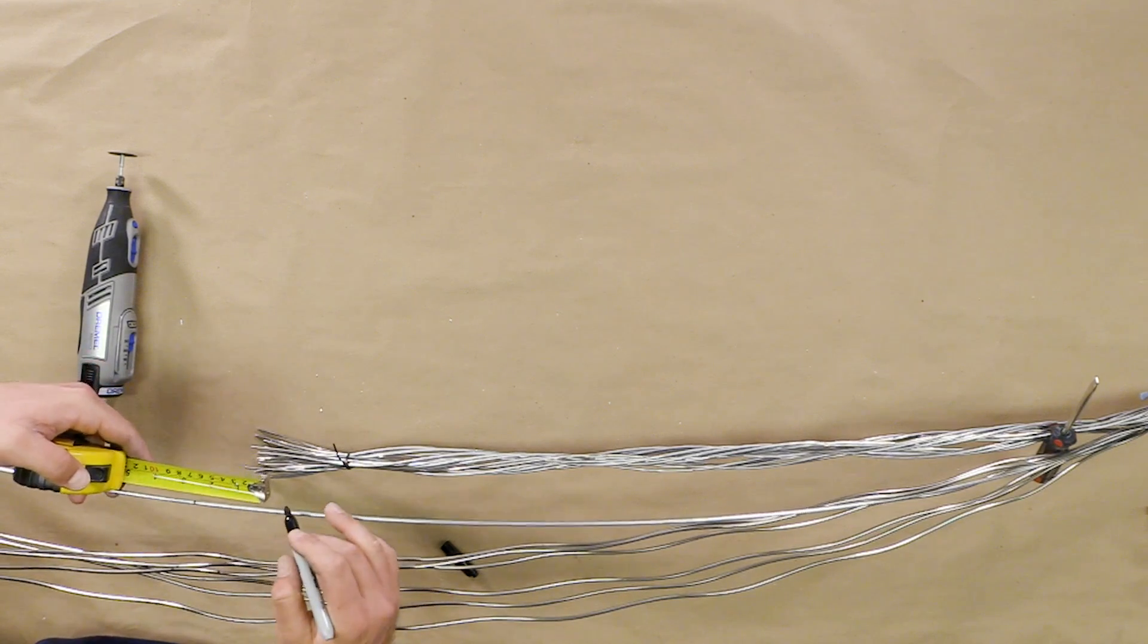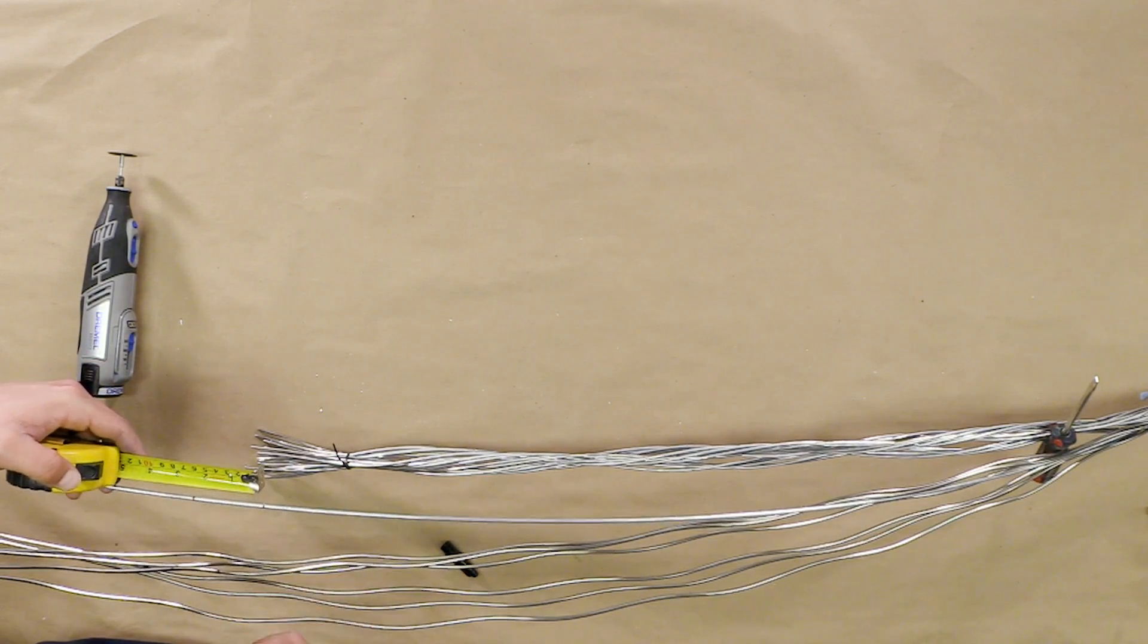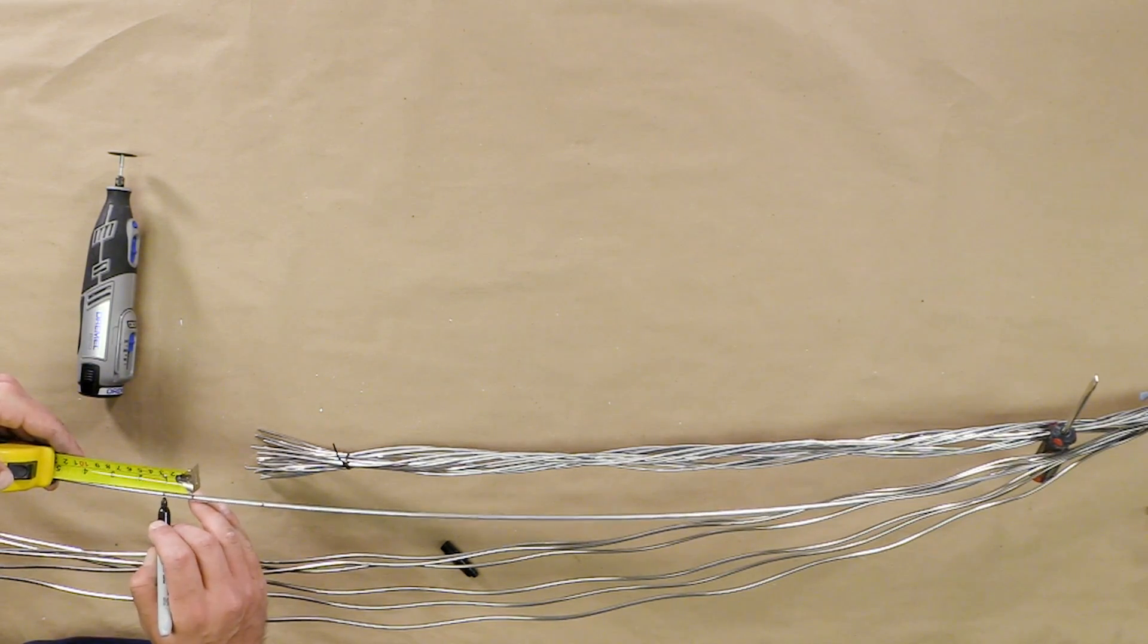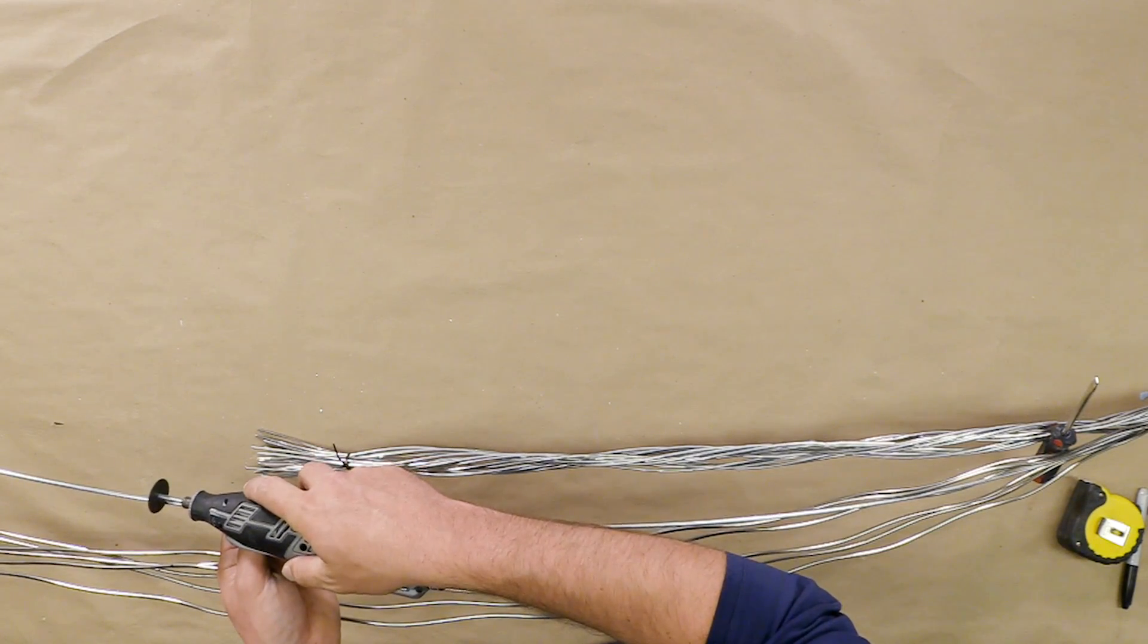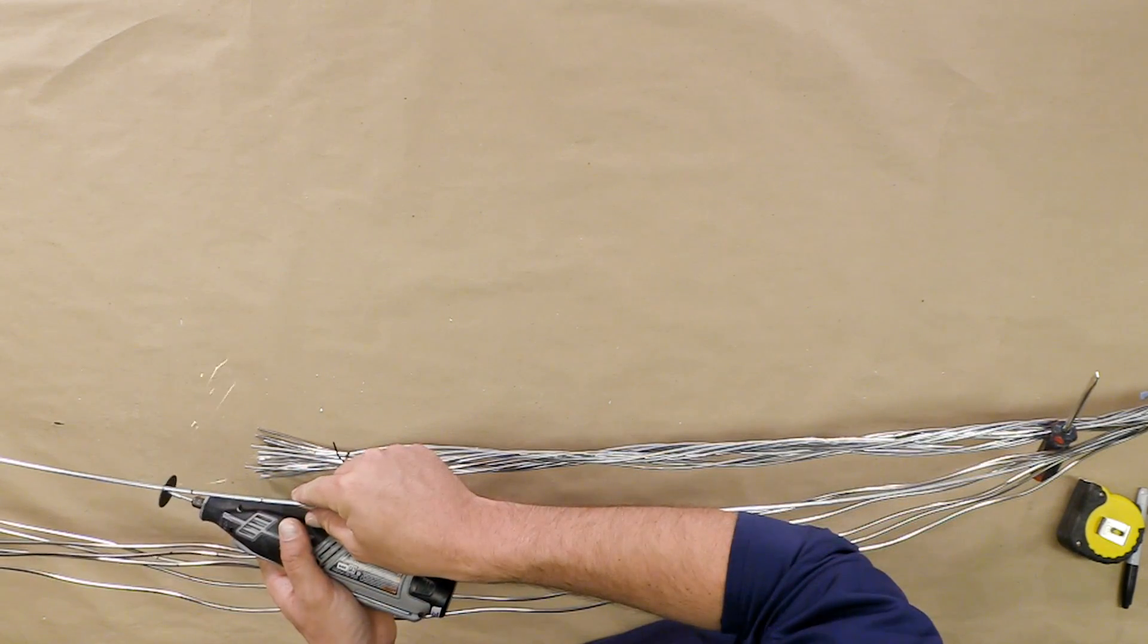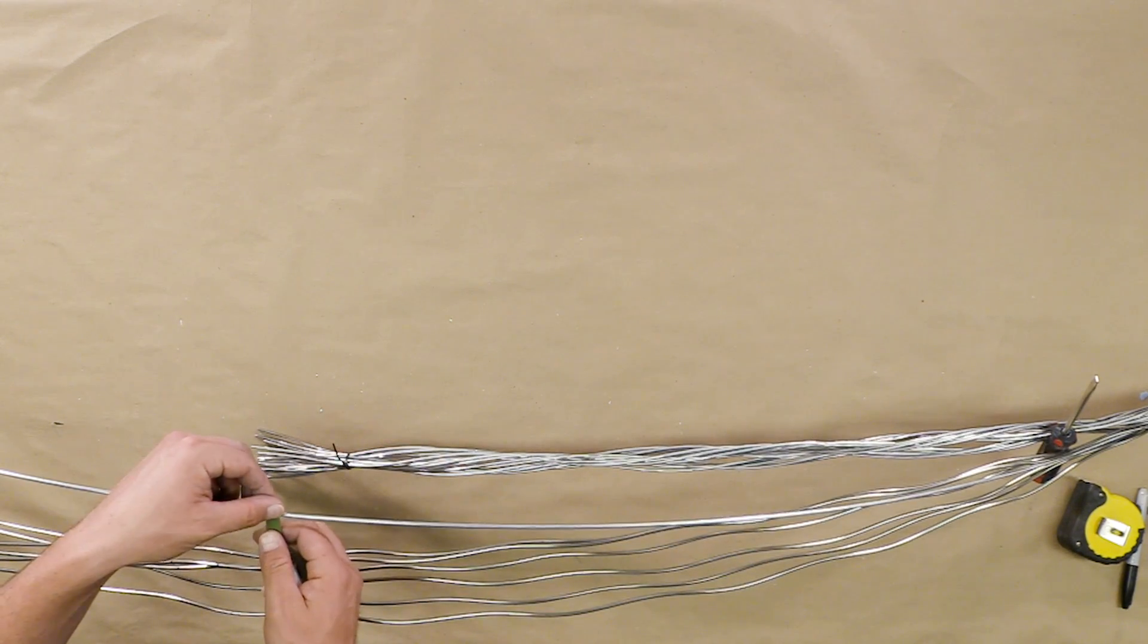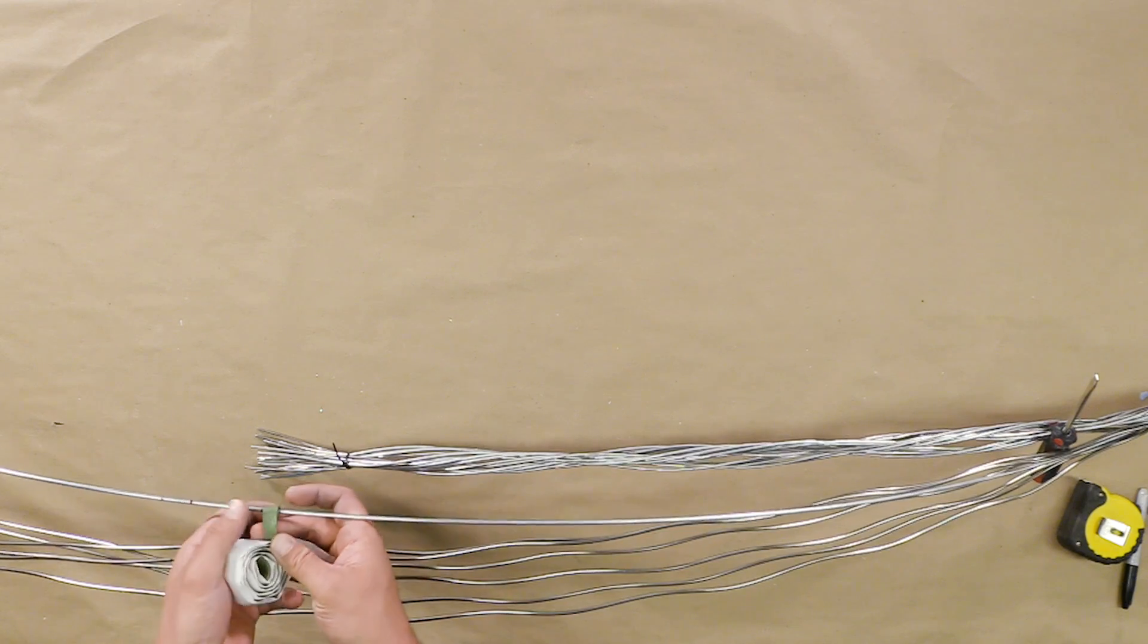Mark the central strength member two and a quarter inches from the original marked cut location. Then mark the central member one inch outside of the original marked cut location. Very lightly score the center member at the one inch marked location. Place one full wrap of green sealant on either side of the two and one quarter inch marked location.